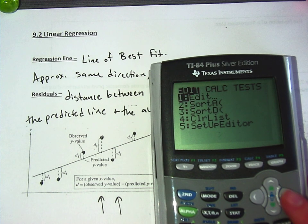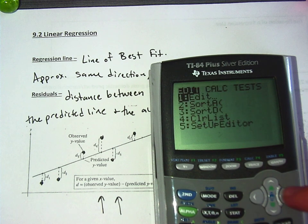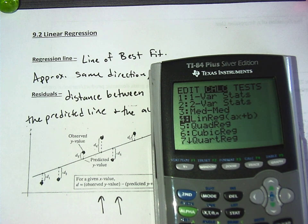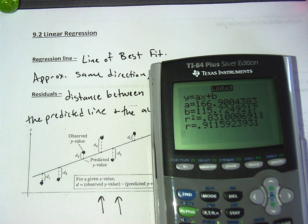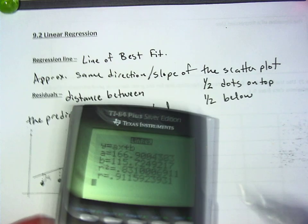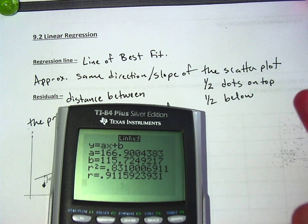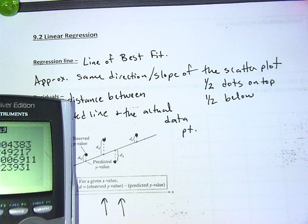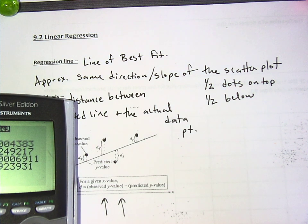Then I hit stat. Calc. One. No, not lin. Stat. Calc. Linear regression. Okay. L1, L2, and calculate. Am I going too fast or is everybody okay? Okay. So, I'm going to write the linear regression line. Y equals AX plus B. I really wish they called it MX plus B because it's the slope, right? But that's just how the calculator shows.